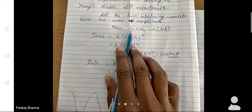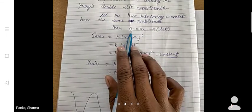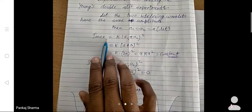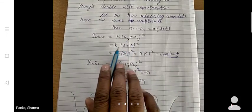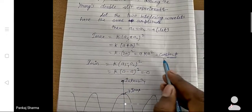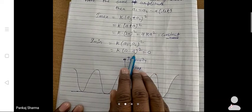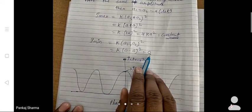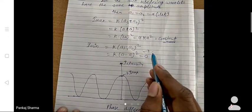Here both wavelengths had the same amplitude — A1 and A2 equal to A. So the maximum intensity is K into (A1 plus A2) whole square = K into (A plus A) whole square = K into (2A) whole square = 4KA². The minimum intensity is K into (A1 minus A2) whole square = K into (A minus A) = 0.